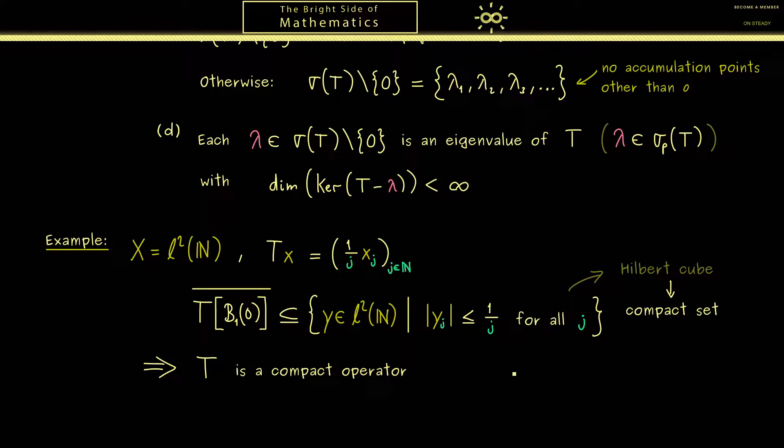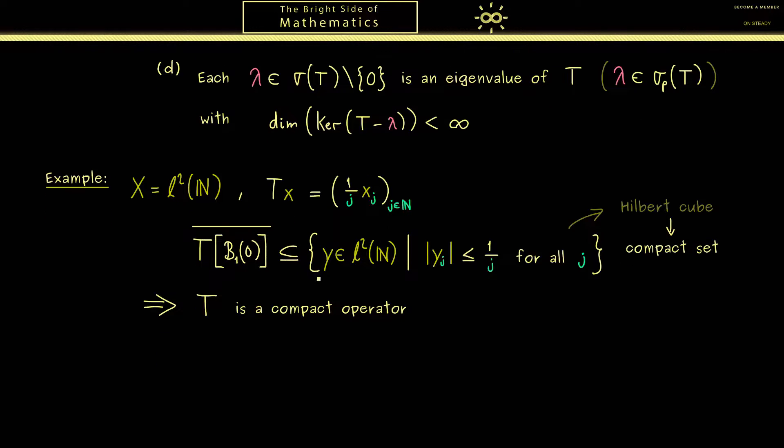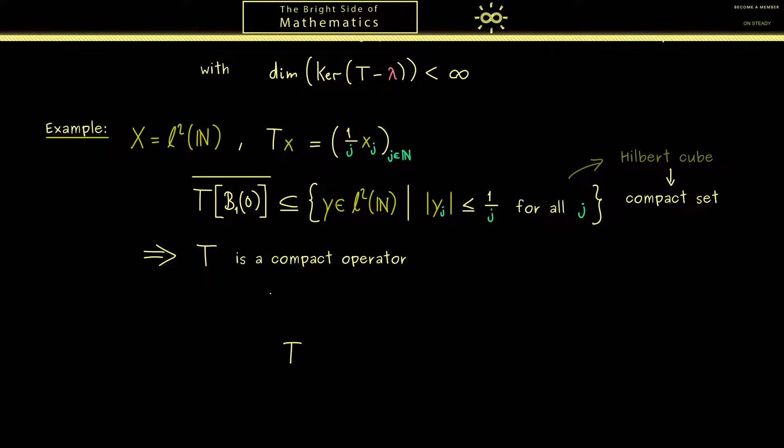But now, the question is, do we know the spectrum of this operator? And maybe there, it's helpful that you could rewrite the operator as an infinite dimensional matrix. Then, we immediately see that all the values are 0, with the exception of the diagonal. So first we have 1 over 1, then comes 1 over 2, then 1 over 3, 1 over 4 and so on.